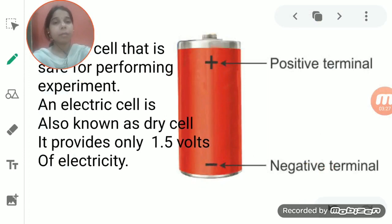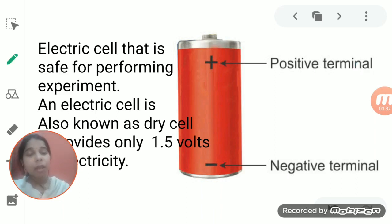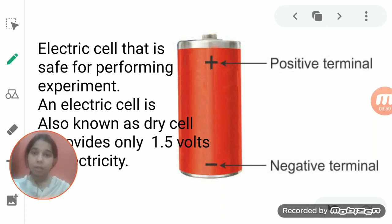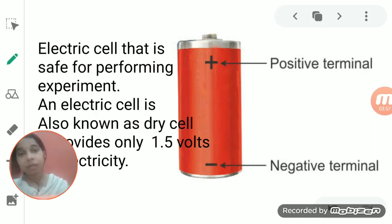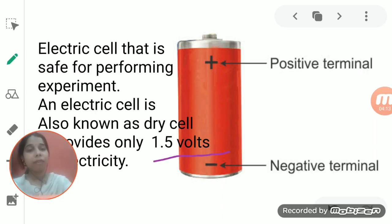Now we will talk about the dry cell, also called the electric cell. An electric cell provides a very small amount of electricity compared to a power station. A power station provides 220 volts of electricity, but an electric cell provides only 1.5 volts. Since it provides very little electricity, the possibility of getting an electric shock from it is very low.